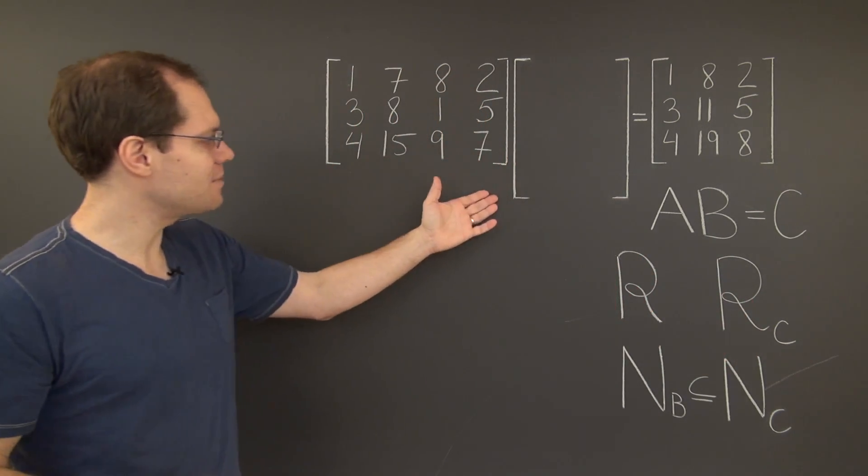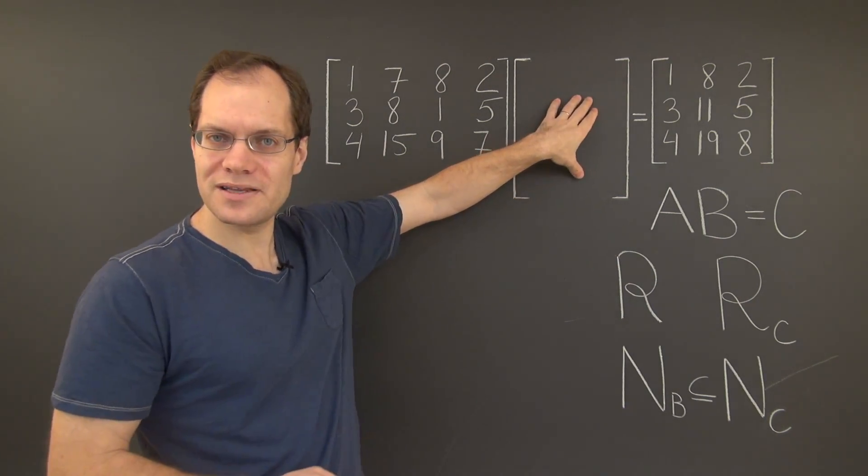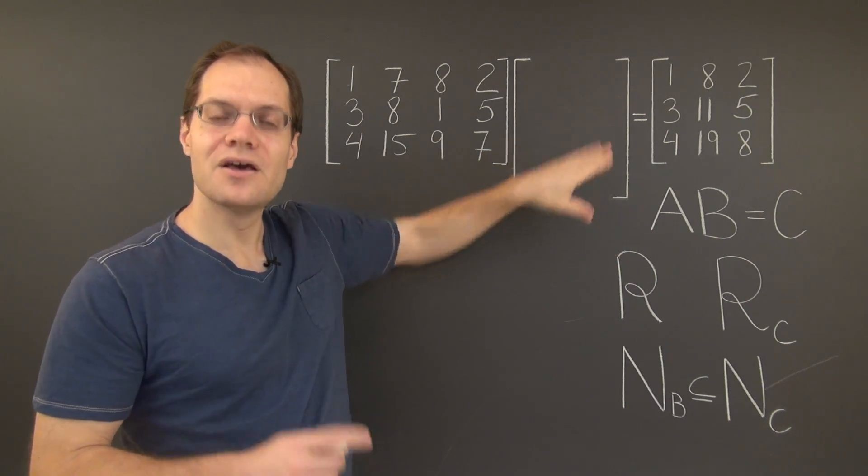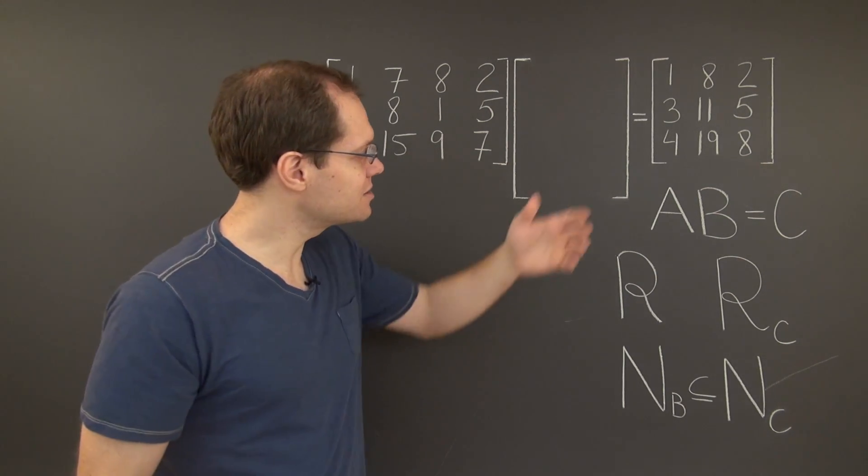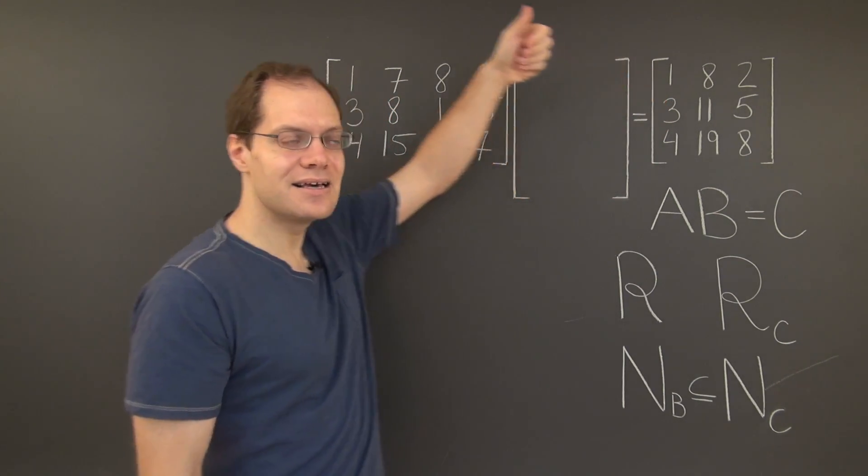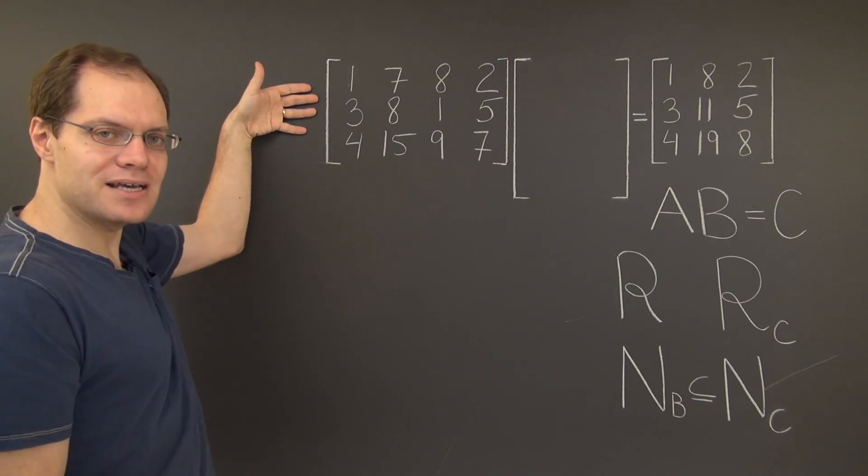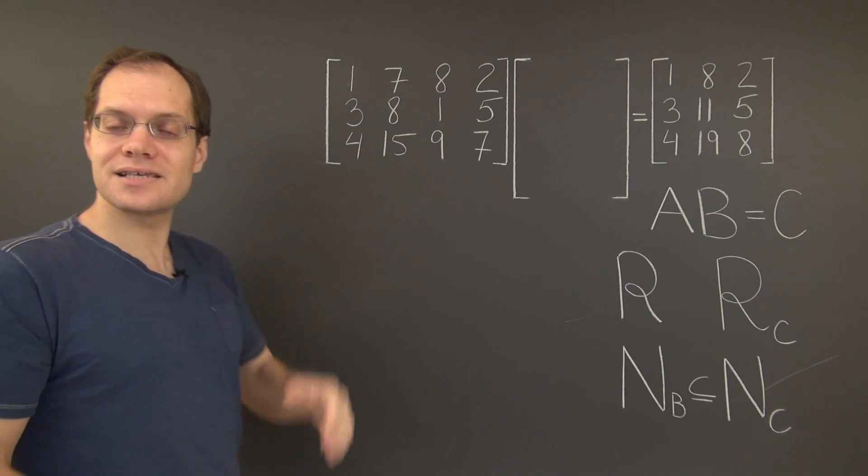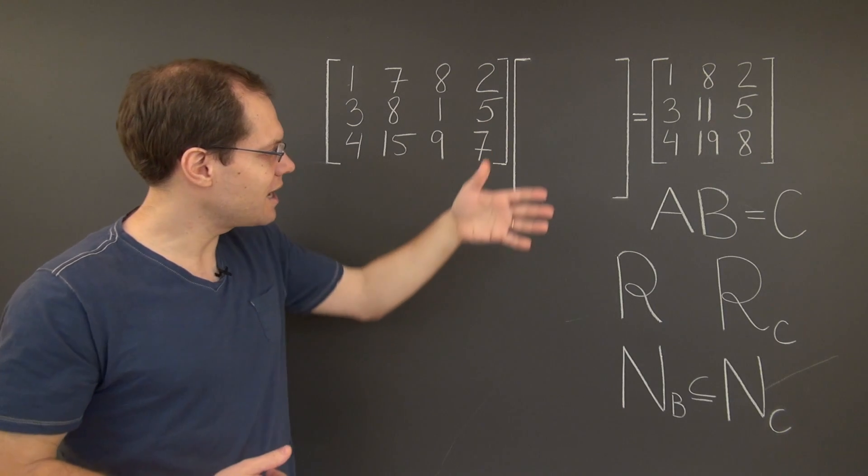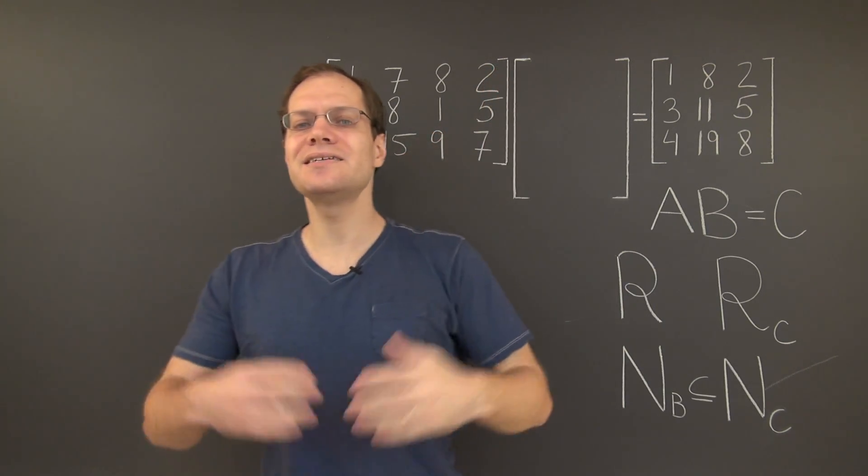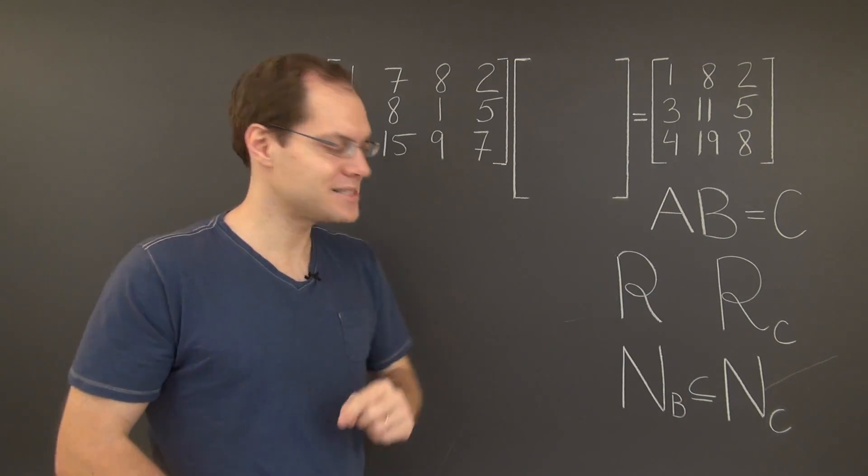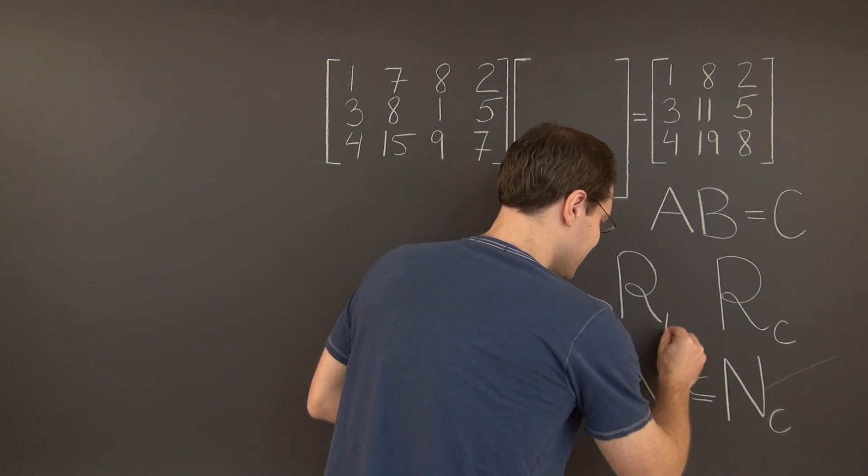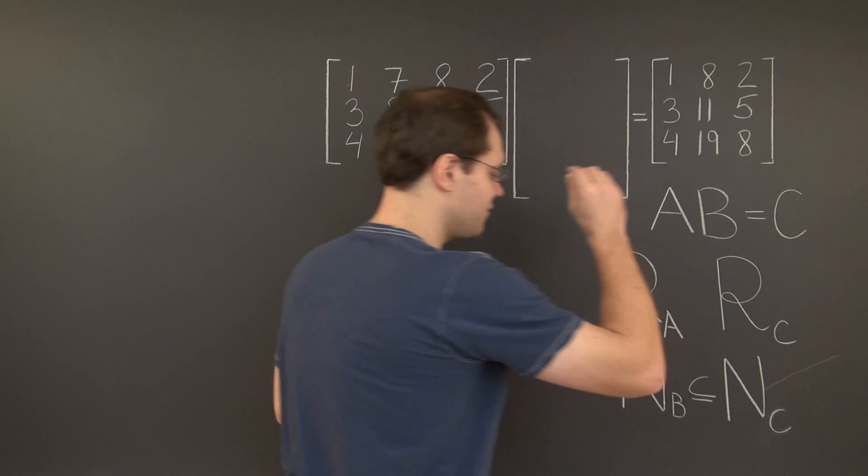And if you look at this example, and I'll tell you in a moment why the matrix B is blank, you quickly realize that it has to be related to the column space of A. Because the columns of C live in the same space as the columns of A. In this case, R3. The columns of B can live in an entirely different space. In this case, that space is R4. So it has to be related to the column space of A.